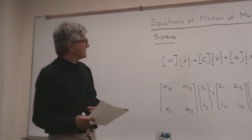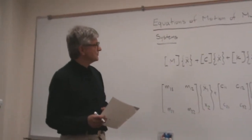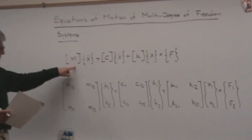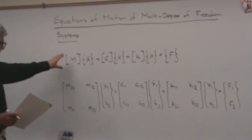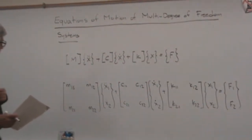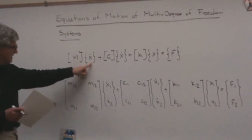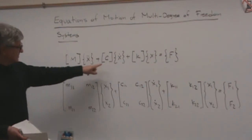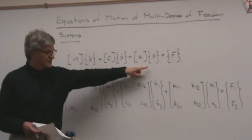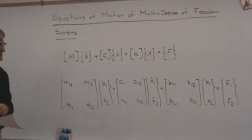Good afternoon. We'll continue the lecture on deriving the equations of motion of a multi-degree of freedom system. In general, we have several equations depending on the number of degrees of freedom. The general form has a mass matrix multiplied by the acceleration vector, plus the damping matrix multiplied by the vector of velocities, plus the stiffness matrix multiplied by the vector of displacement, equal to the vector of external forces.